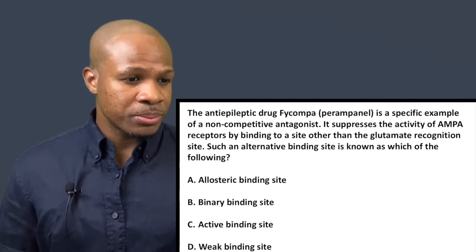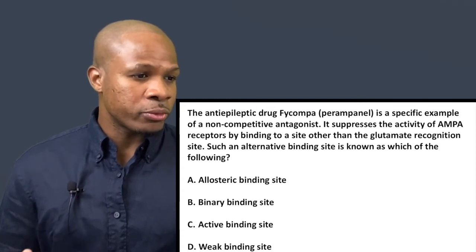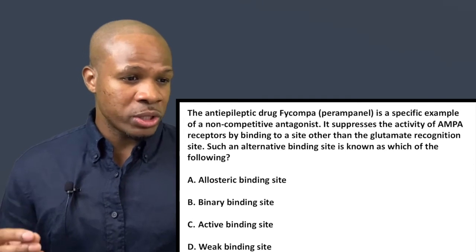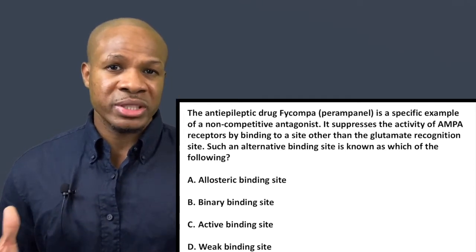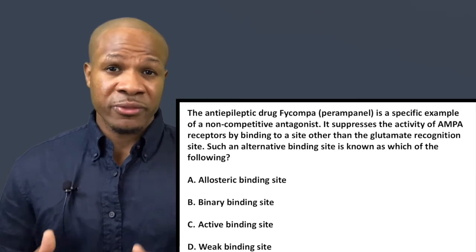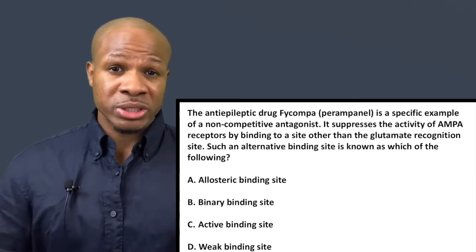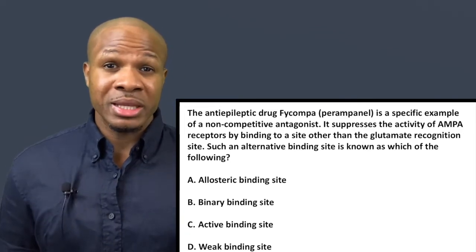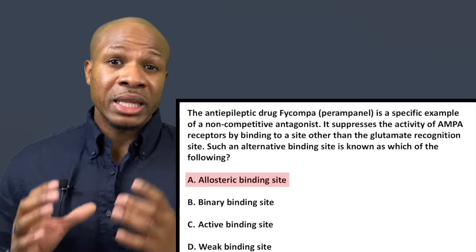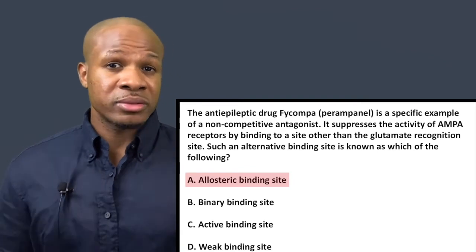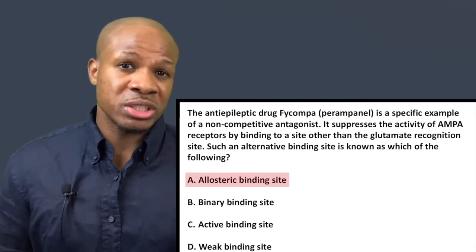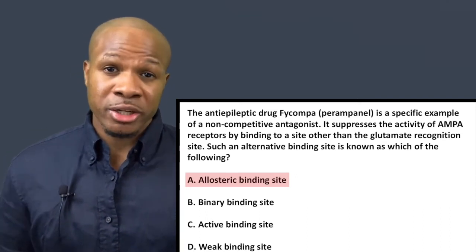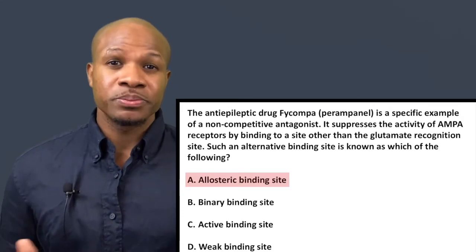Question two says: the anti-epileptic drug Fycompa, also known as perampanel, is a specific example of a non-competitive antagonist. It suppresses the activity of AMPA receptors by binding to a site other than the glutamate recognition site. Such an alternative binding site is known as which of the following? When a ligand binds to a site other than the active site, that site is known as an allosteric site — basically another name for alternative site. The correct answer is answer choice A, allosteric binding site.